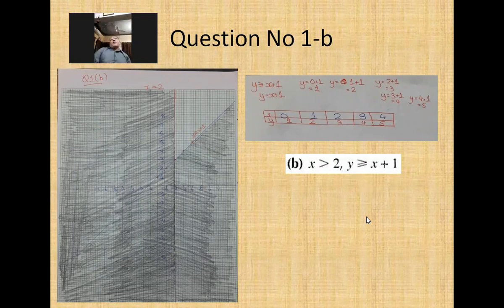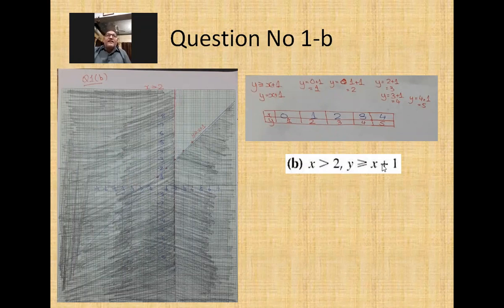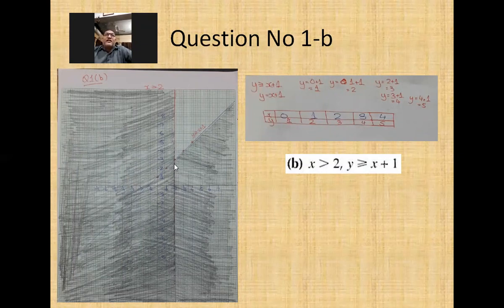In part b, there are two inequalities: x > 2 and y ≥ x + 2. I have to draw the line x = 2, which is a vertical line, and then the line y = x + 1. I made a table, supposed values x = 0, 1, 2, 3, 4, and got coordinates (0,1), (1,2), (2,3), (3,4), (4,5). I plotted and joined them to get the graph.